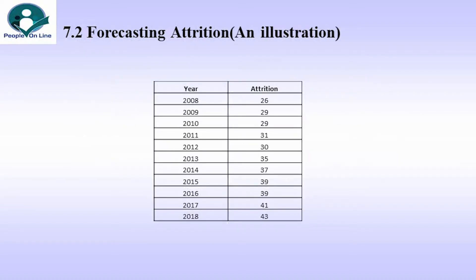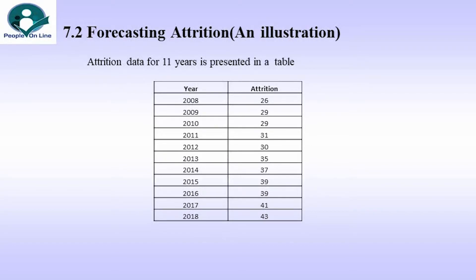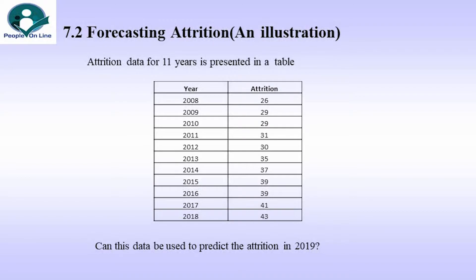Forecasting Attrition — an illustration. Attrition data for 11 years is presented in a table, starting from year 2008 with attrition at 26, going right up to 43 in year 2018. Now, can we use this data to predict attrition in 2019? The answer is yes.